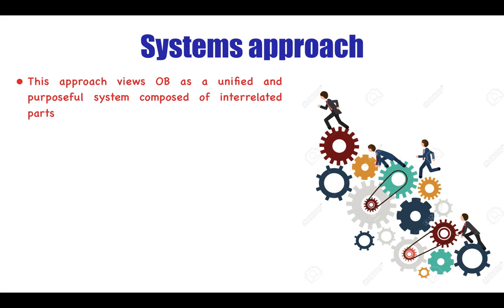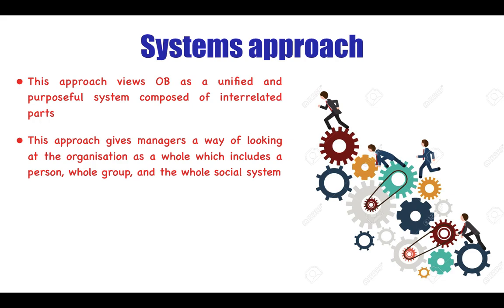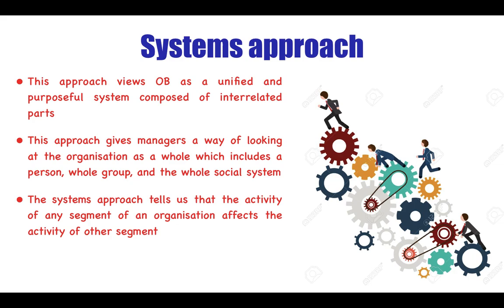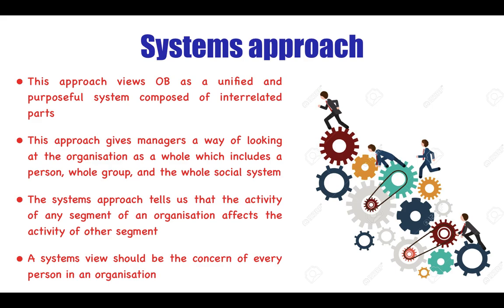The last is the systems approach, which views OB as a unified and purposeful system composed of interrelated parts — if one part has a problem, the other parts will also be affected and unable to attain their goals. This approach gives managers a way of looking at the whole organization, including every person, group, and the whole social system. The activity of any segment affects the activity of every other segment, so a systems view should concern every person in the organization.